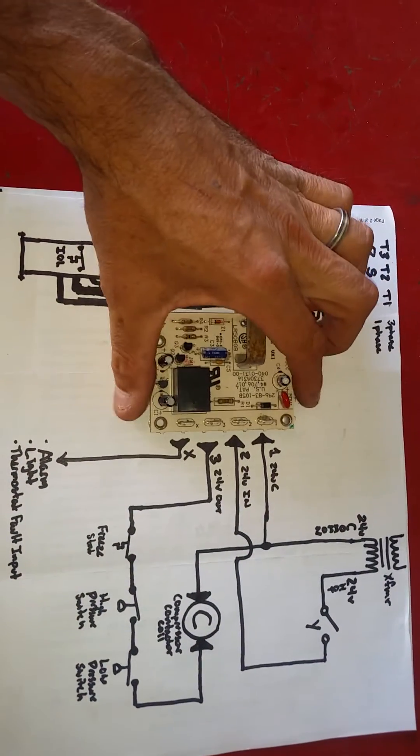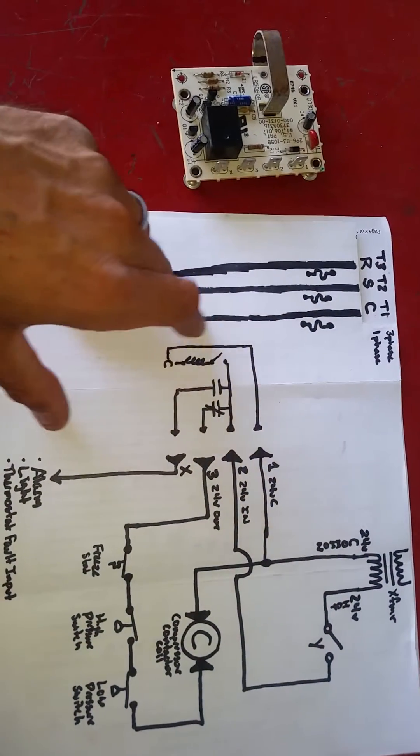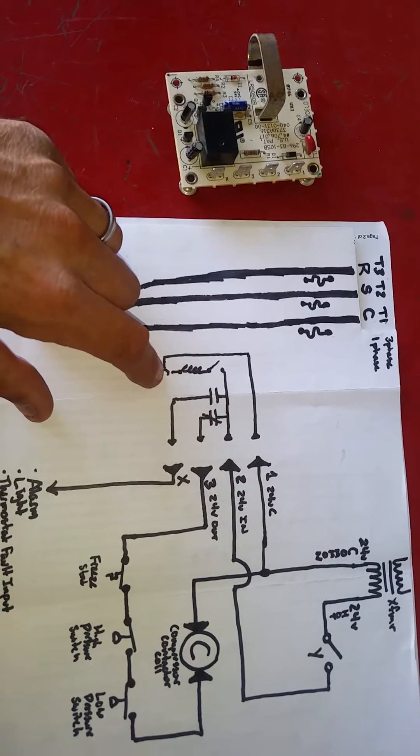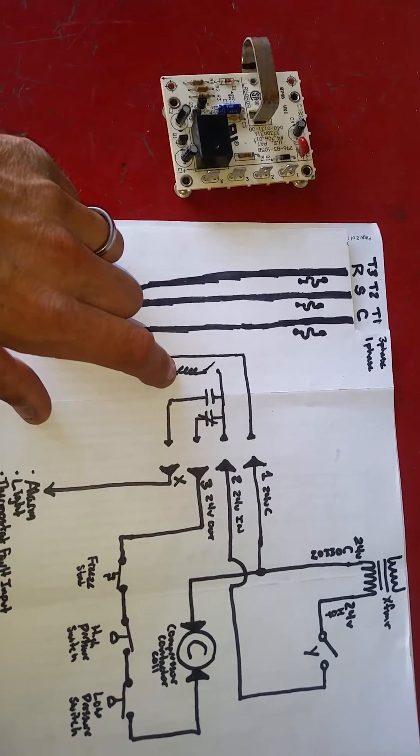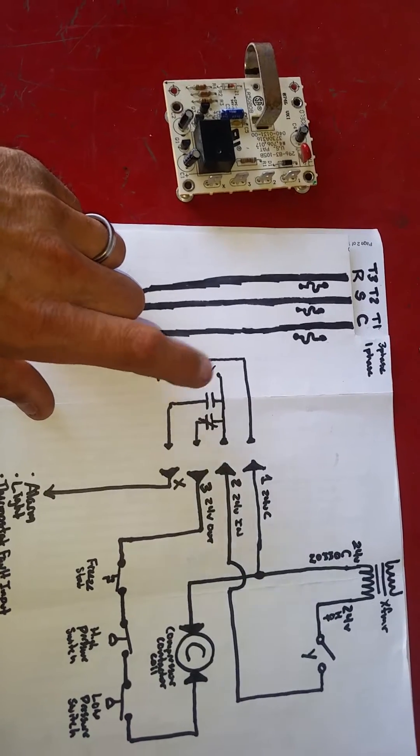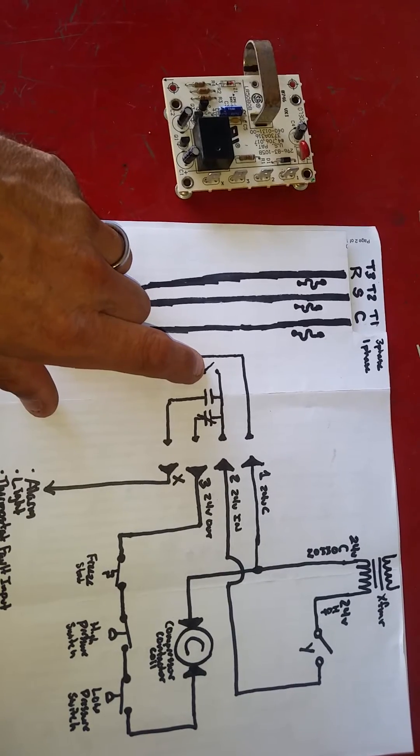So to kind of take a general look, here's kind of the internal circuitry of the board. Obviously, you have our common. Our common is just basically feeding the lockout coil of that relay. So we have potential voltage at the lockout coil. But you notice here, this would be our amperage or our current switch.